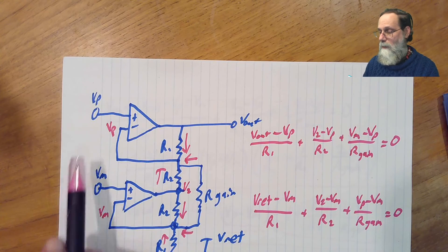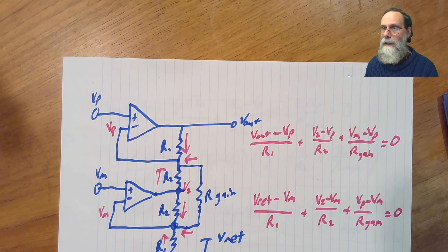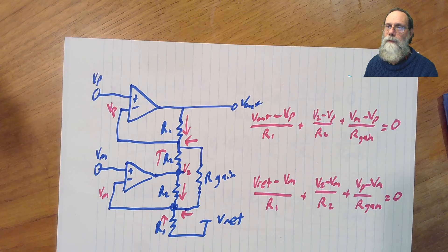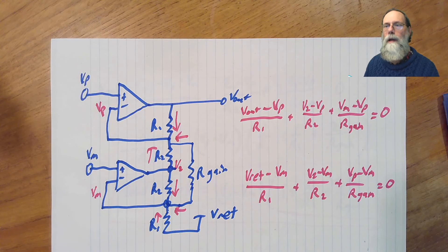So usually you can get a somewhat larger differential signal being handled appropriately by this 2 op amp instrumentation amplifier than you can with the 3 op amp instrumentation amplifier. It depends a little bit on exactly what your common mode is and how big your differential signal is. And the details on that are in the book if you really want to follow up on them.